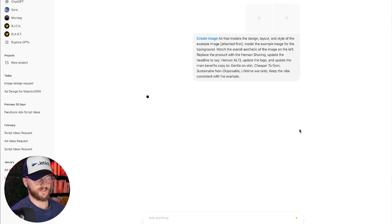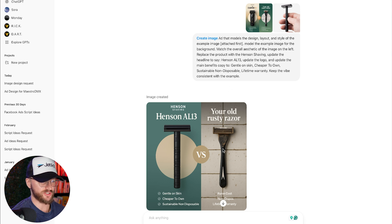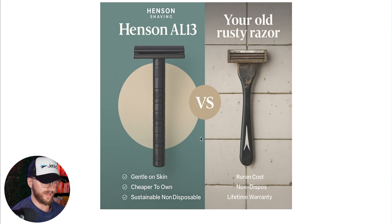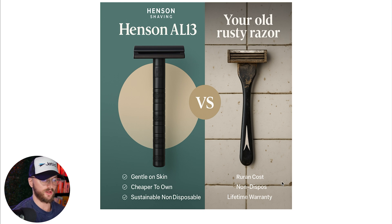We upload everything and here's the final result — look how awesome this ad looks. You can see it took the same design elements and made some slight adjustments. The circular design element became a full dirty-bathroom background, which I actually think stands out more. It took the product, removed the hand that was in the original product image, made it a clean cutout, includes all the product details, has the product name in a similarly matched font, and lists all the benefits: gentle on the skin, cheaper to own, sustainable, non-disposable.